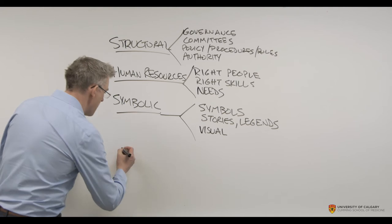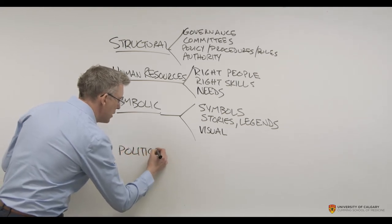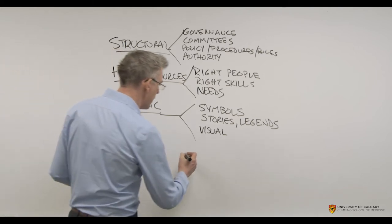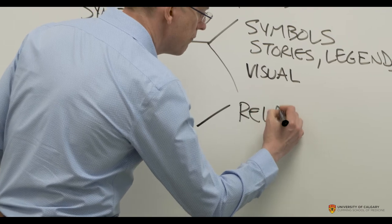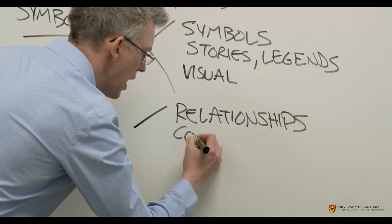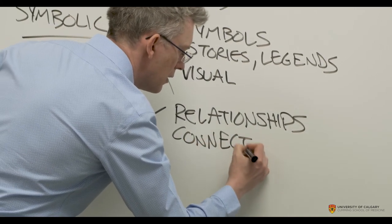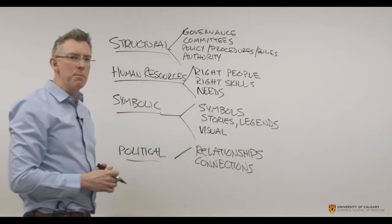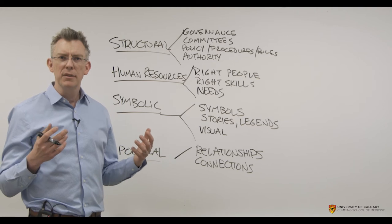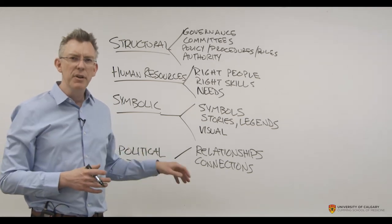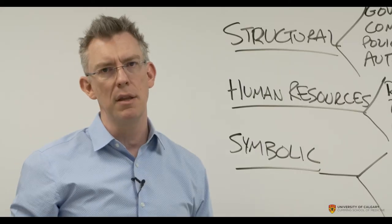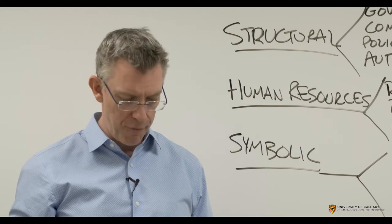And then finally there's political. People often think political is gritty, but this is mainly about relationships and connections. There can sometimes be negative politics — a key person bearing a grudge from the past — but it's mainly around what we can do in this frame to move things forward.